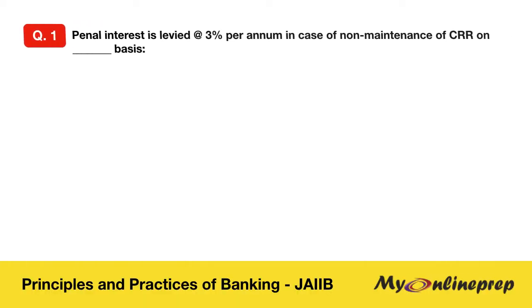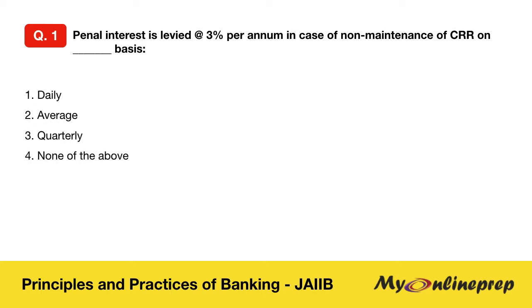Question 1: Penal interest is levied at 3% per annum in case of non-maintenance of CRR on a dash basis. Your options are: daily average, quarterly, or none of the above.